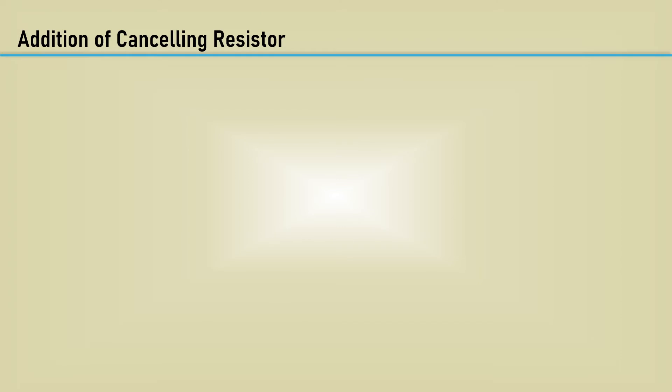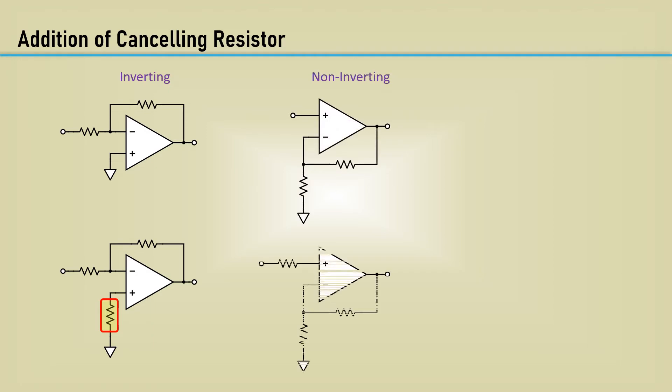Here's the ways the offset cancelling resistors are used for the various configurations. The inverting amplifier gets the resistor inserted between the non-inverting input and ground, as was shown in the previous databook example. The non-inverting configuration gets the resistor inserted between the input and the non-inverting input. The voltage follower gets both the resistor on the input and in the feedback path.